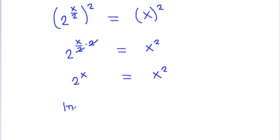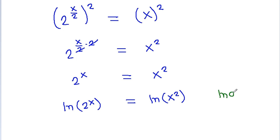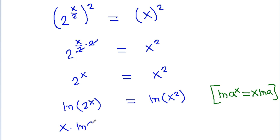And if we take ln both sides, then ln 2 power x will be equal to ln x square, and using the identity ln a power x equals x times ln a, it will be x times ln 2 is equal to 2 times ln x.